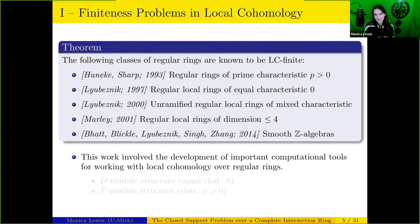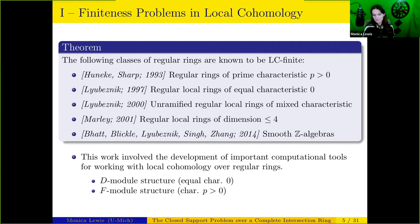A nice feature — particularly true of Lyubeznik's papers — is that developing the work on hard finiteness problems over a regular ring involved developing powerful computational tools for working with local cohomology over a regular ring in the first place. For example, by taking advantage of differential operators in equal characteristic zero, or by taking advantage of the F-module structure and the action of the Frobenius in prime characteristic p. So one motivation for asking about finiteness problems over a singularity is that by working on hard finiteness problems, we may be led to develop computational tools for working with cohomology over a singular ring.